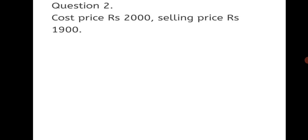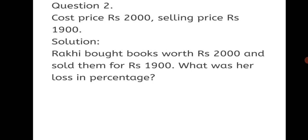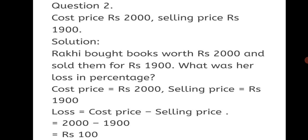Question 2: Cost price is equal to Rs.2000. Selling price is equal to Rs.1900. Only this much information is given. Let us frame the word problem. Rakhi bought books worth Rs.2000 and sold them for Rs.1900. What was her loss in percentage? Let's solve. We will first find the loss using the formula for loss, and then find the loss in percentage. Loss = Cost price minus Selling price.